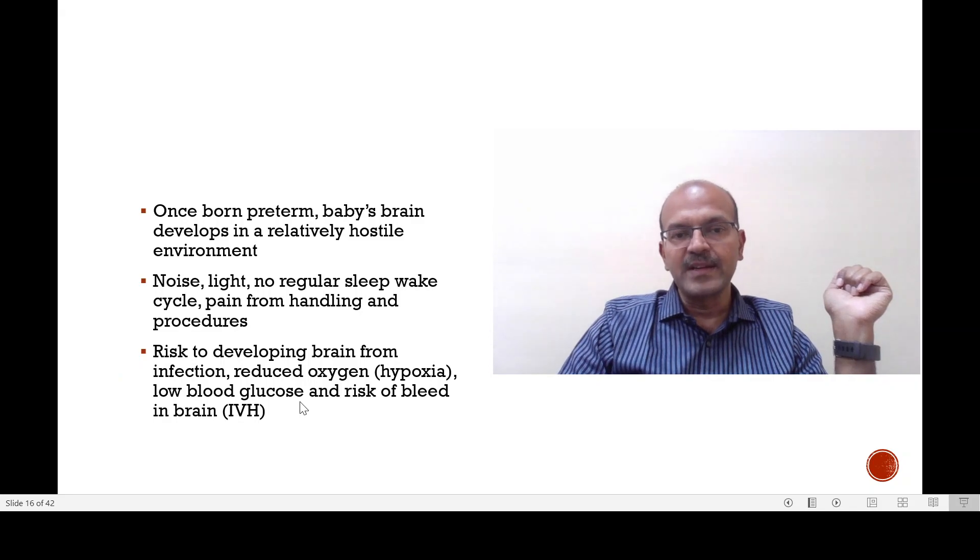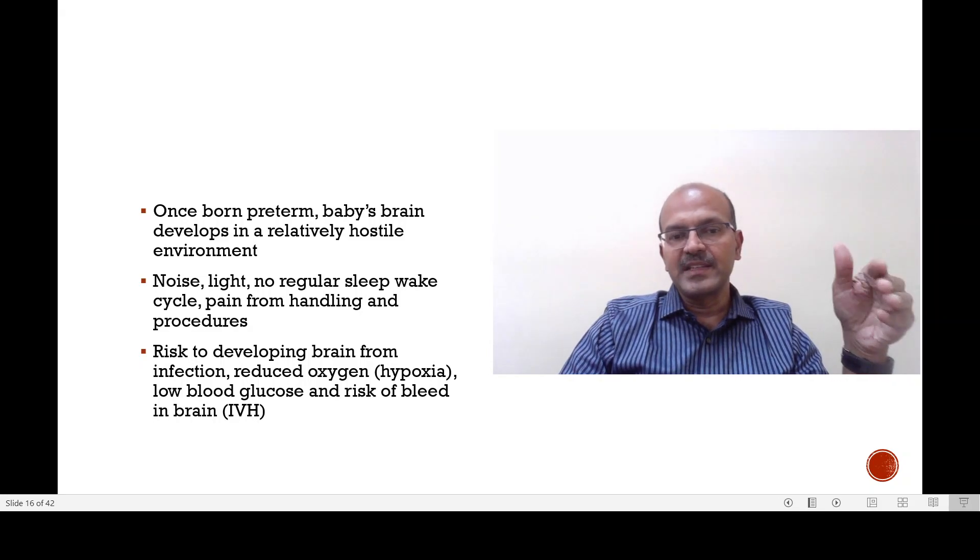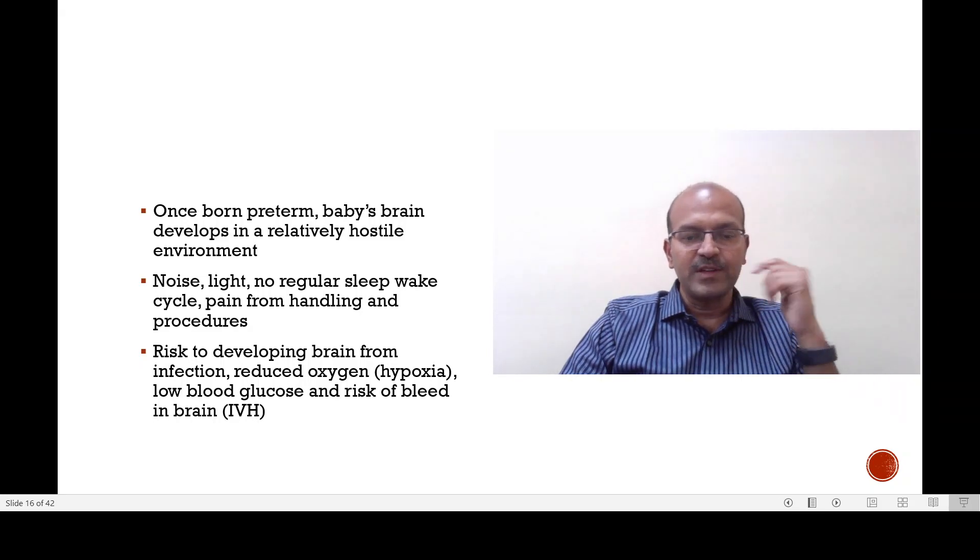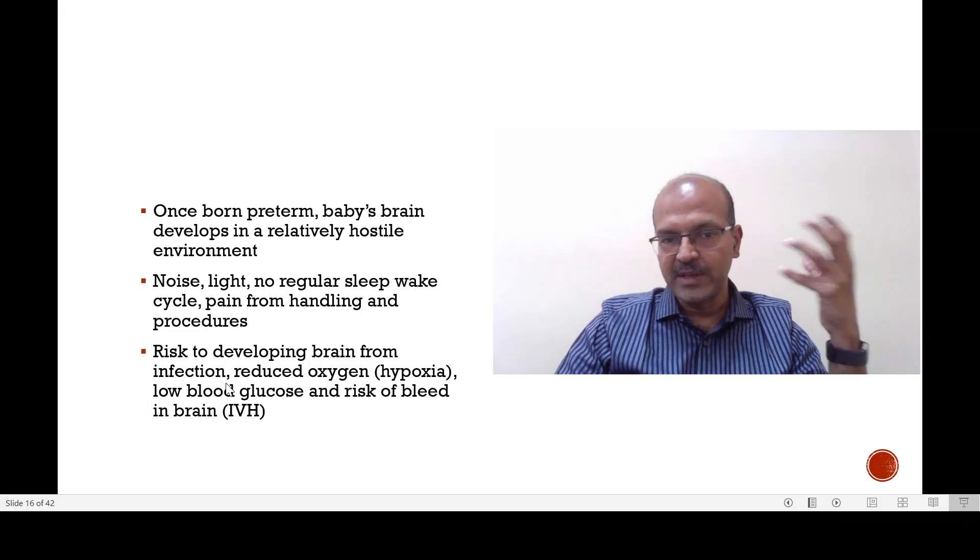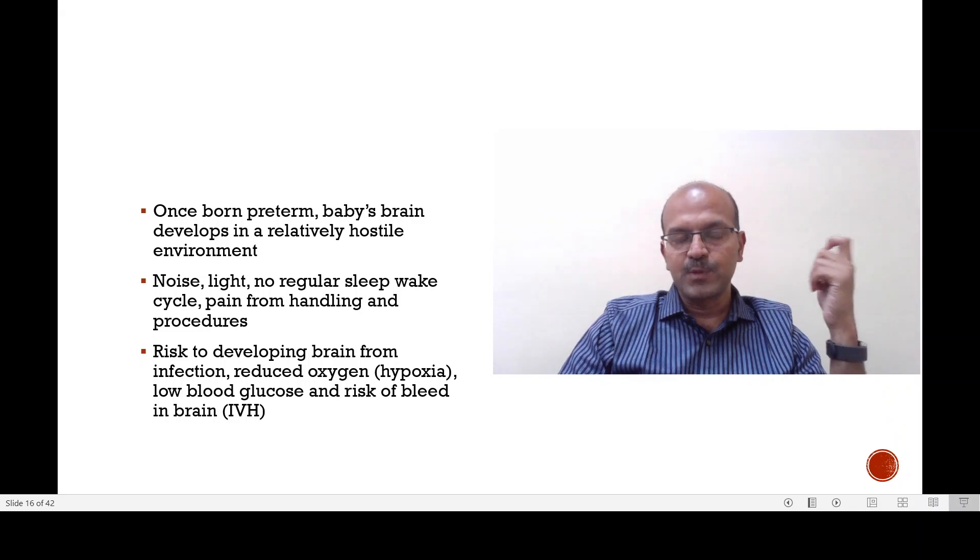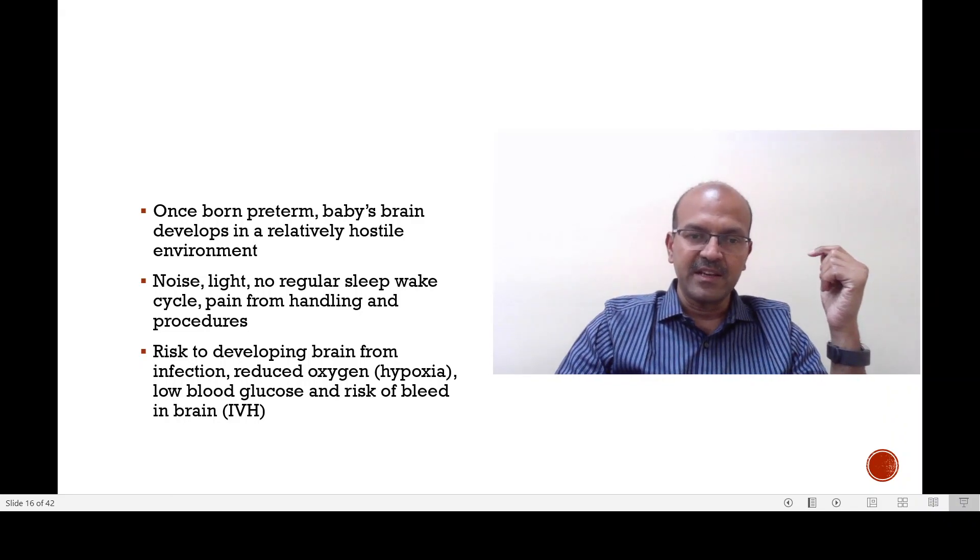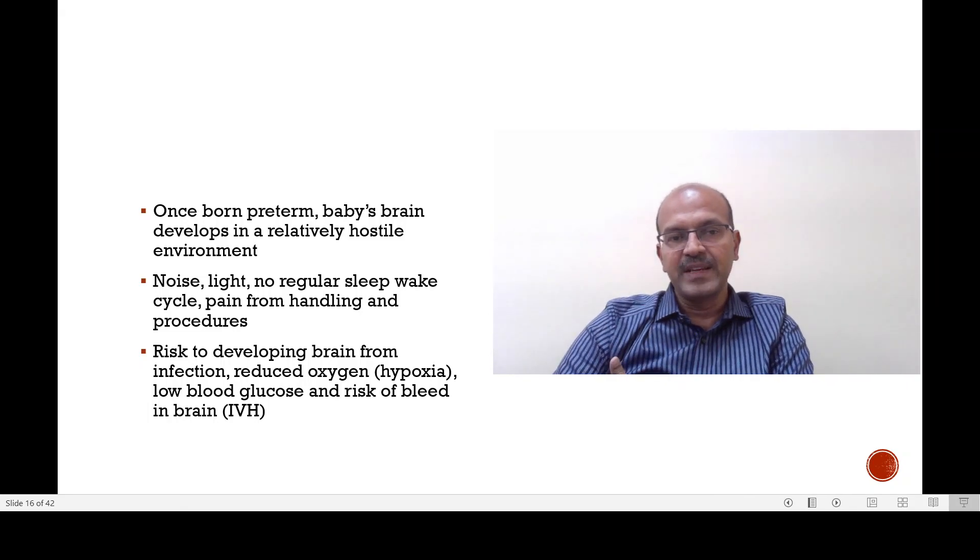These babies are at risk of low blood glucose as well and the intraventricular hemorrhage and other associated scan abnormalities may also affect the neurodevelopment because as I told you in the beginning the germinal matrix is the area where the neural cells proliferation happens and the intraventricular hemorrhage in the extreme preterm babies may affect this early stage of brain development.